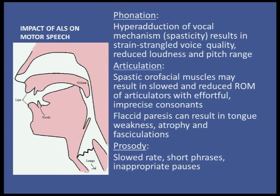Along with that can come reduced loudness and monopitch. Looking at articulation: you can have spastic qualities with significantly slowed movement, reduced range of movement, and imprecise consonants. Flaccid paresis can result in tongue weakness, atrophy, and fasciculations. These patients can eventually become anarthric, where they can't pronounce any sounds at all. Lastly, prosody will result in significantly slowed rate, short phrases, and inappropriate pauses.